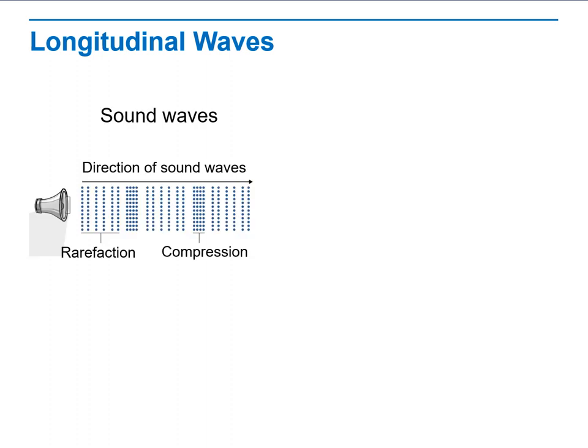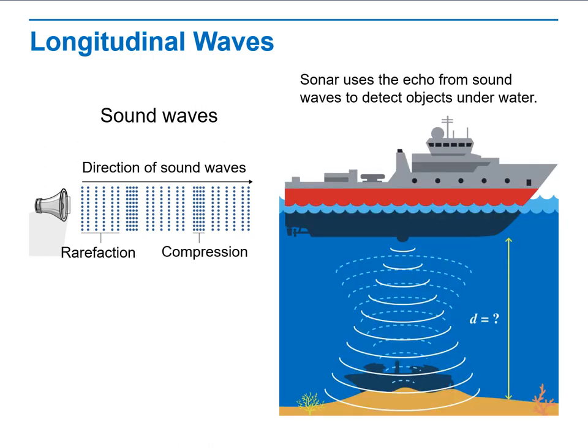Now, we'll talk about longitudinal wave. Longitudinal wave is made up of a series of rarefactions and compression corresponds to trough and compression. Sonar uses the echo from sound wave to detect objects under water. This type is a longitudinal wave.